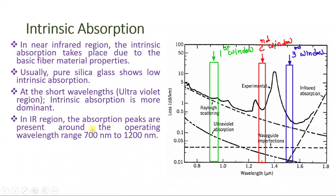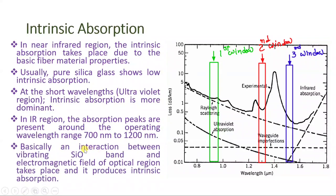In the IR region, absorption peaks are present around the operating wavelength range from 700 nanometers to 1200 nanometers, and this range covers two basic operating windows — the 950 nanometer window and the 1300 nanometer window. To some extent, it even affects the 1310 nanometer second window, and the third window at 1550 nanometers is also affected by this infrared absorption. Basically, this intrinsic absorption happens because of the vibration of the SiO material with the electromagnetic field. When there is an interaction between the vibrating SiO bond and the electromagnetic field, this intrinsic absorption takes place.